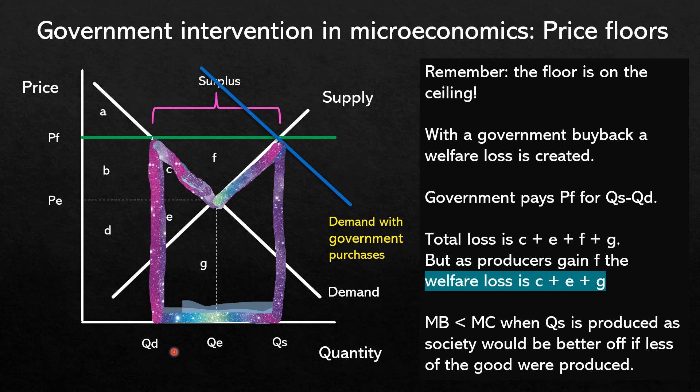To sum up some of the impacts of government purchases: governments need to identify what to do with the excess supply they have bought. Firms are inefficient, resources are over-allocated, and there is a welfare loss to society created by this shape on the diagram.